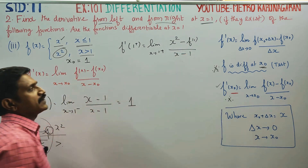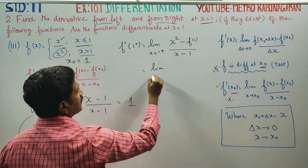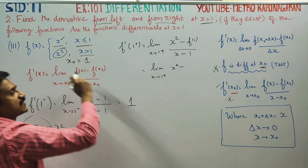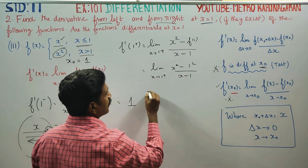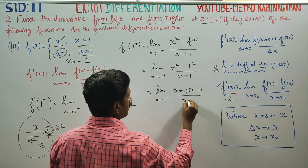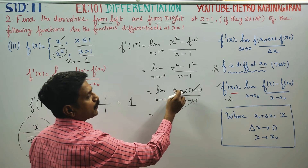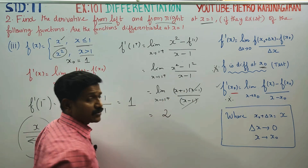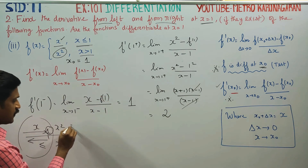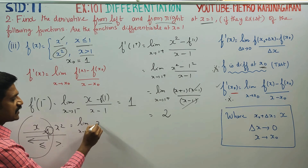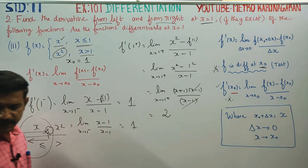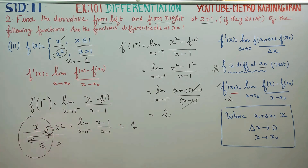x minus x₀ is 1. So the limit as x tends to 1 plus gives us x squared minus 1, by x minus 1. Using the identity a squared minus b squared equals (a+b)(a−b), we cancel (x−1), giving us the limit of x plus 1, which equals 1 plus 1 equals 2. For the left derivative, the limit as x tends to 1 minus gives answer 1.